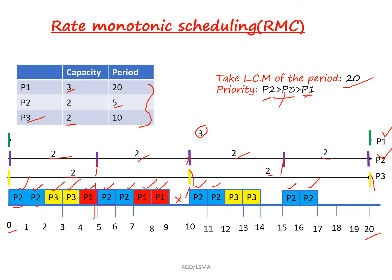Moving on to time 10: P2 is again allocated two times. After that, allocate P3 again, because P3 executed two times from 0 to 10 and after 10 it must execute two more times — so allocate P3 two times here. After P3, you would normally allocate P1, but looking at the Gantt chart, P1 has already been allocated three times over the period of 20. The execution time for P1 is only three times, so P1 has completed its execution and should not be allocated further.